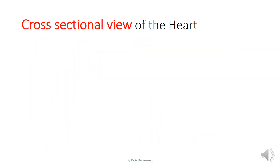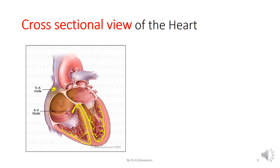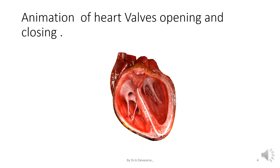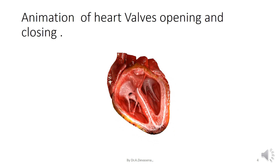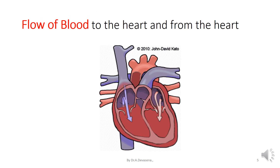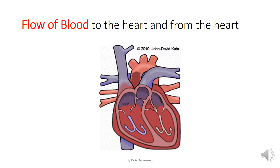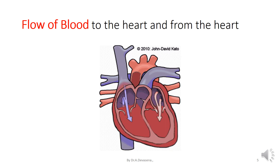The cross-sectional view of the heart is shown below. In this diagram we have the SA node. The SA node is the sinoatrial node where the origin of the heartbeat starts. Then we have the AV node, that is the atrioventricular node. Here, the flow of blood is being indicated. The animation shows heart valves opening and closing, and also the flow of blood to and from the heart.